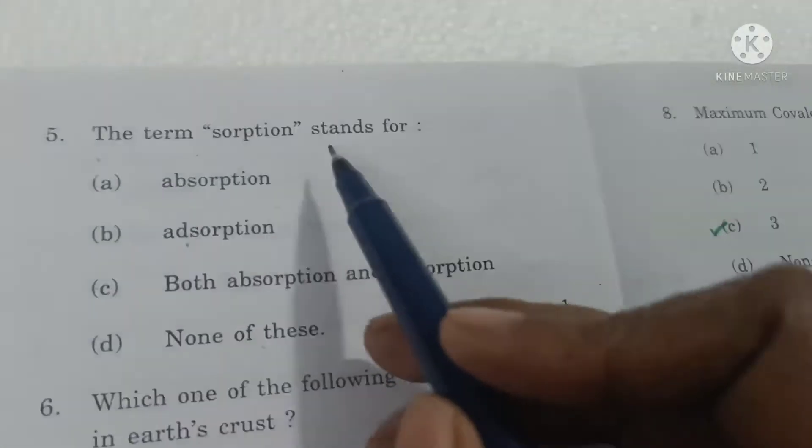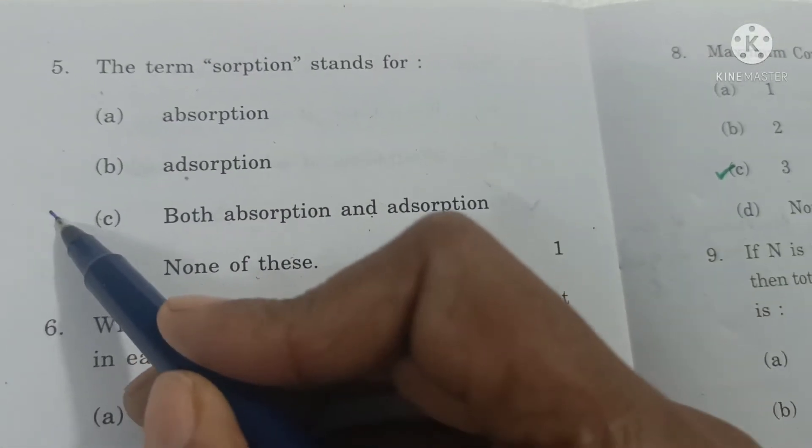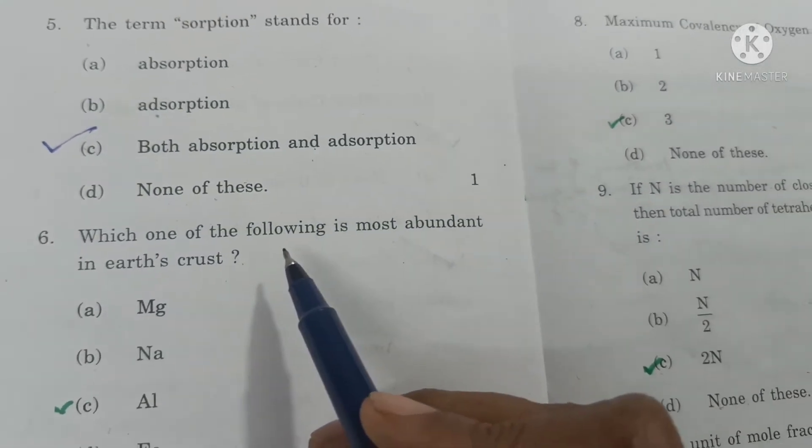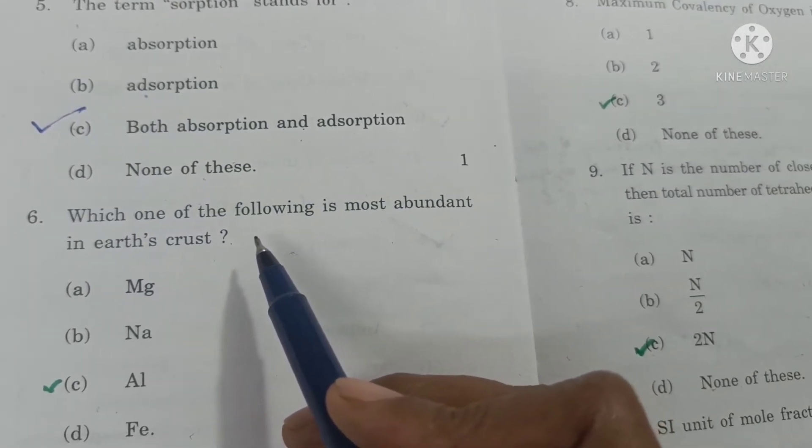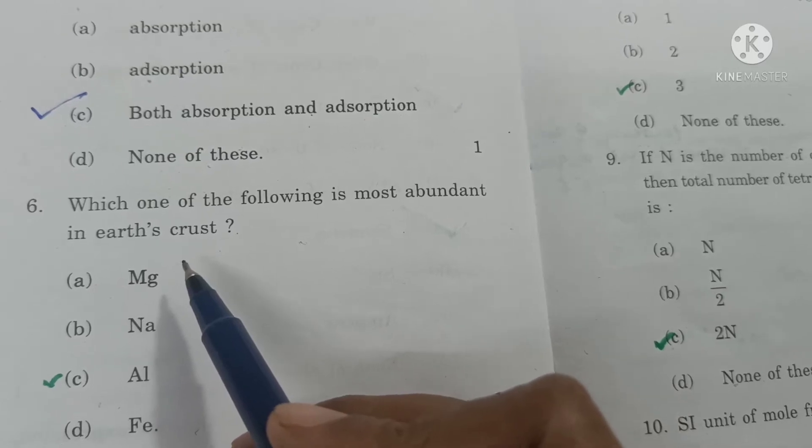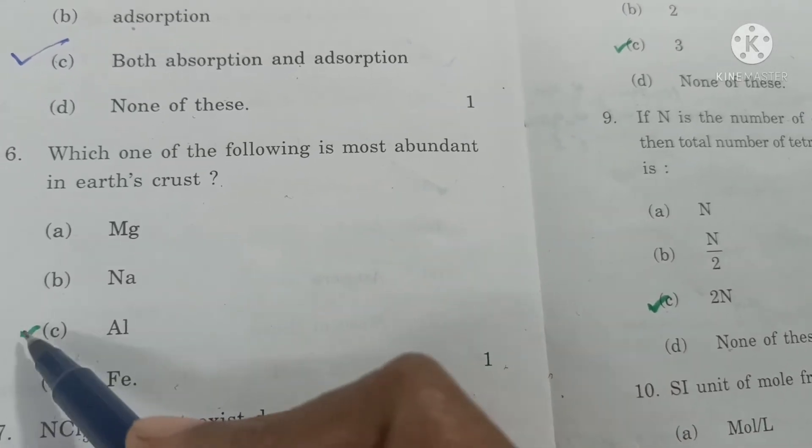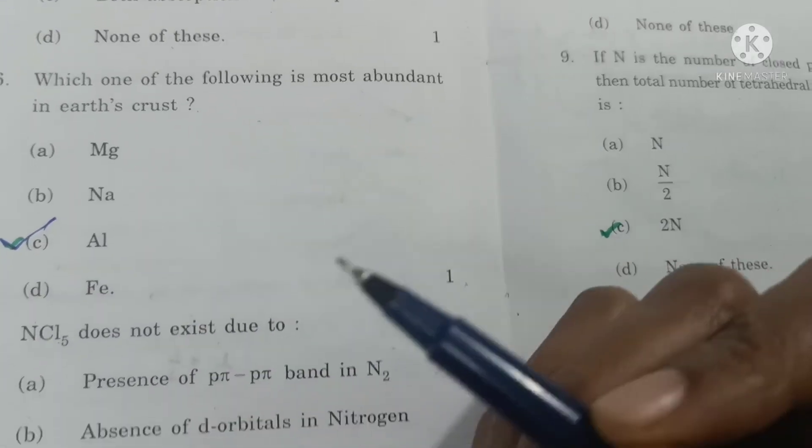The term sorption stands for both absorption and adsorption. Which one of the following is most abundant in earth's crust? All these are metals and the most abundant metal is aluminium. So option C is correct.